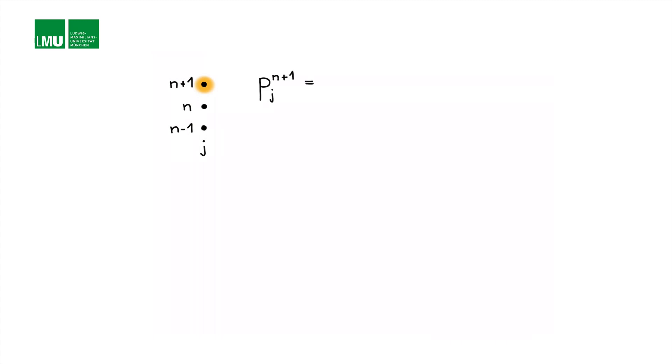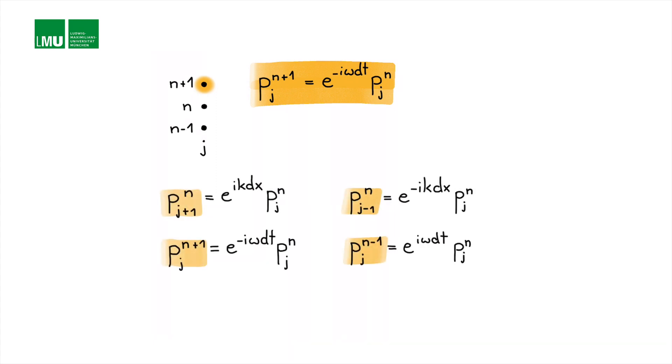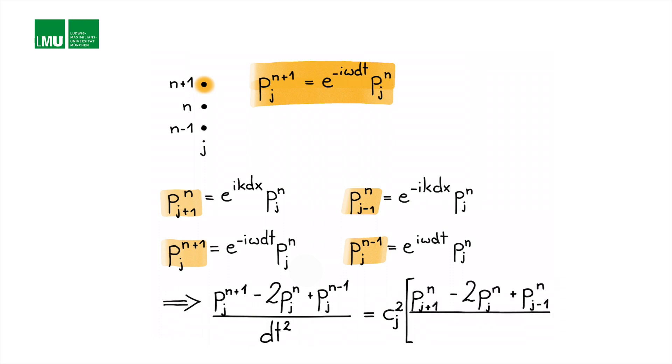The same applies to discrete time. For example, p at j, n plus 1, corresponding to t plus dt, equals e to the minus i·omega·dt multiplying the standard discrete plane wave definition. Now we are ready to enter these expressions into the finite difference approximation of the acoustic wave equation.